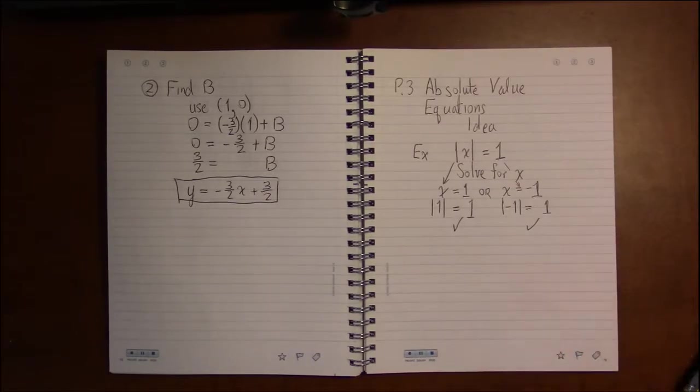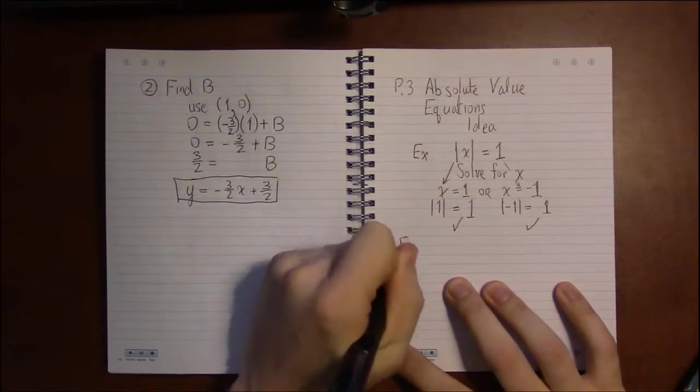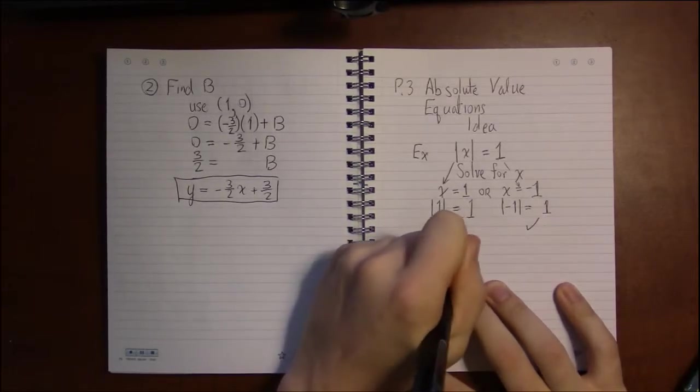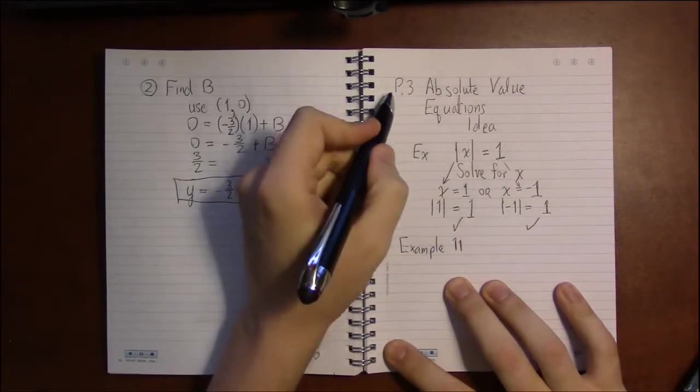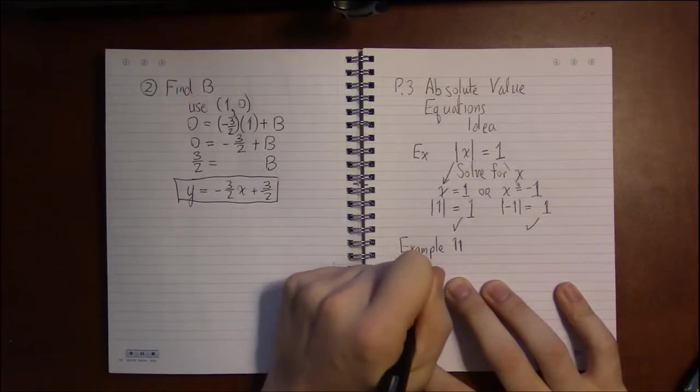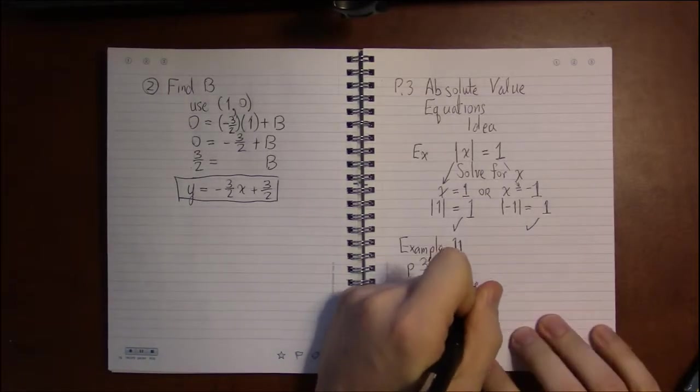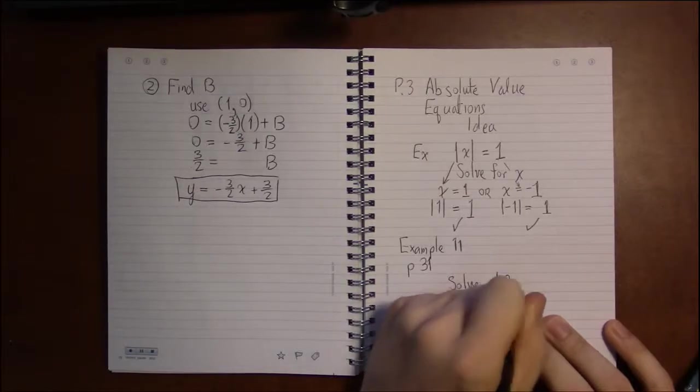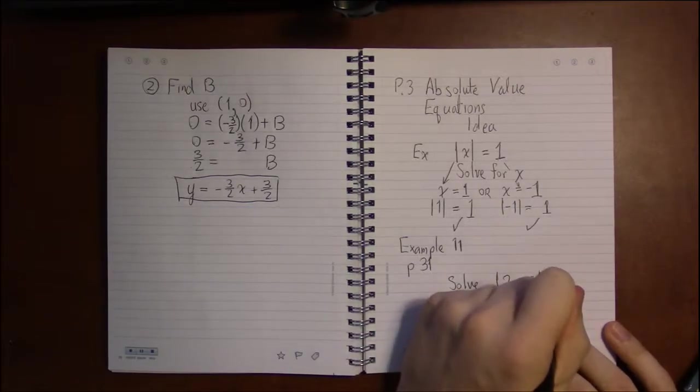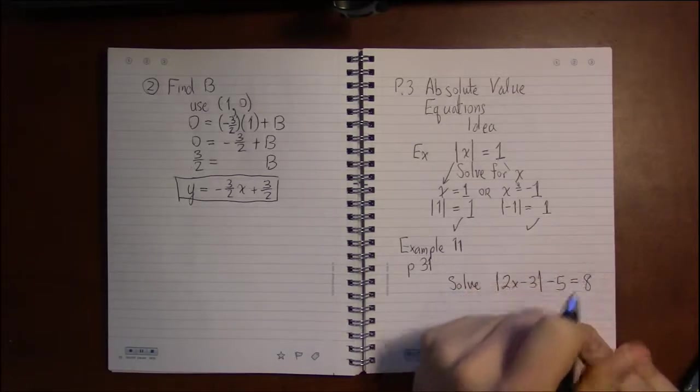Let's take a look at an example. This is example 11 of section P3, and we're back on page 31. We're asked to solve the following absolute value equation: absolute value of 2x minus 3, then subtract 5, and the result we should get from all that should be 8.